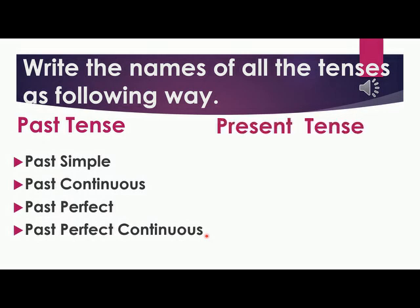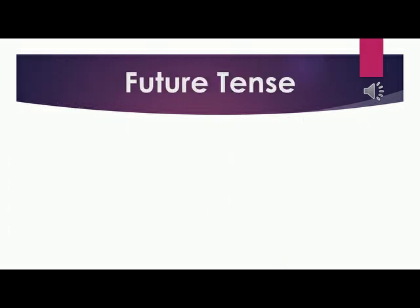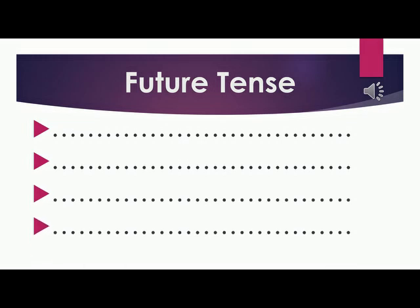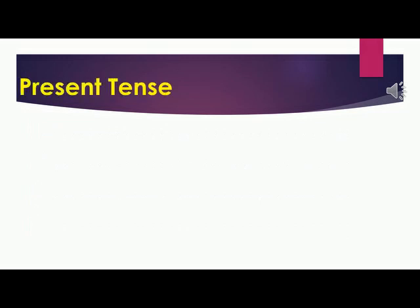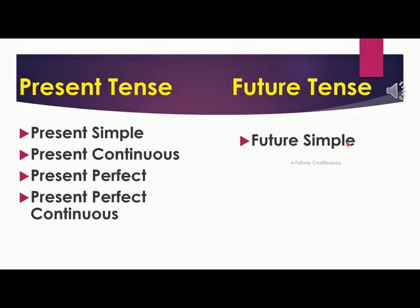And now, let's go to present tense. Write present tense on the top. The first branch is present simple, the second present continuous, the third is present perfect, and the fourth is present perfect continuous. Now, stop the video and try writing the future tense branches yourself. These are present tense and future tense with all their branches.